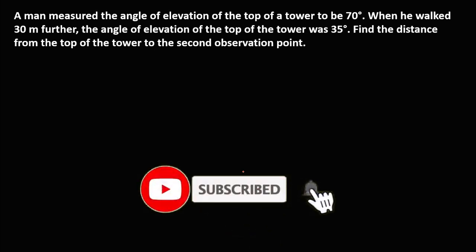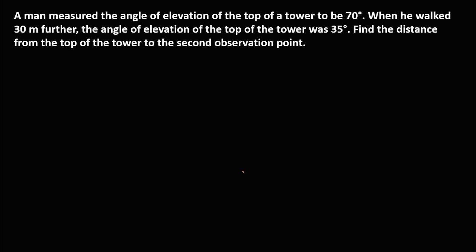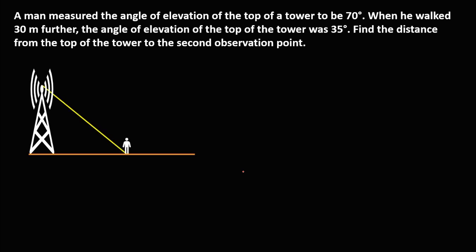Welcome to Matt's story. We have a problem: a man observed the angle of elevation of the top of a tower to be 70 degrees, measured always from the horizontal line. Then he walked 30 meters farther, so the distance from his first to second observation is 30 meters, and the angle of elevation of the top of the tower was 35 degrees from the horizontal line. Find the distance from the top of the tower to the second observation point.